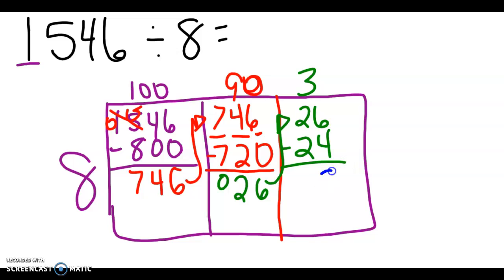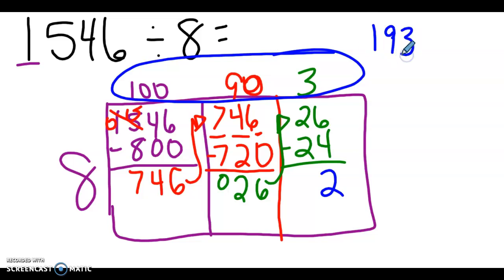And now I'm going to get two as my remainder because I have no other place values. So I'm going to add up my partials on top to get 193 with a remainder of two. And there is my answer.